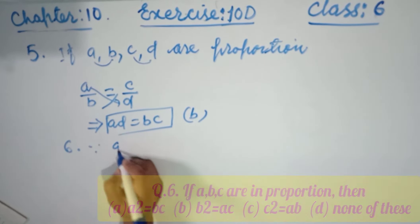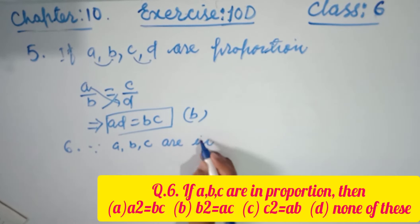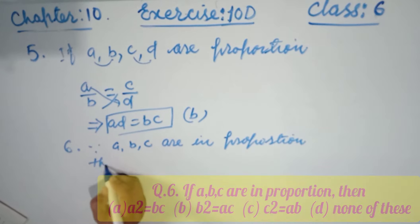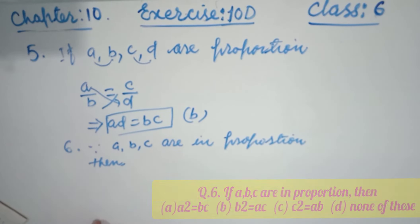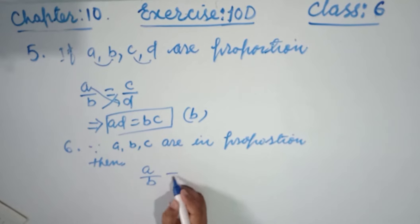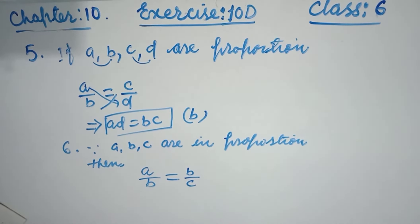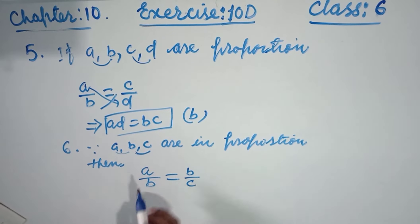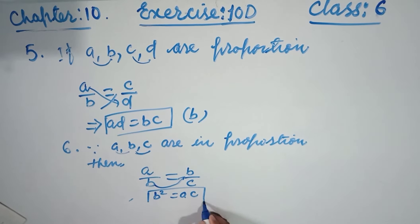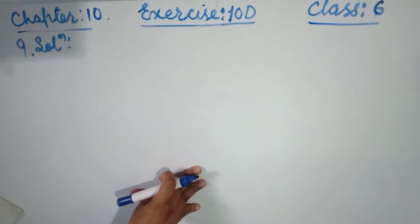Question number six says: if a, b, c are in continued proportion, find the relationship. Since a, b, c are in proportion, a by b equals b by c. By cross multiplication, b into b equals a into c, giving b squared equals ac. So b squared equals ac is the correct answer.